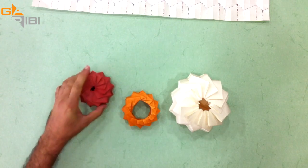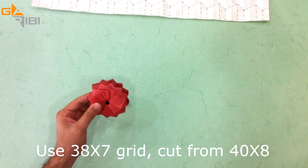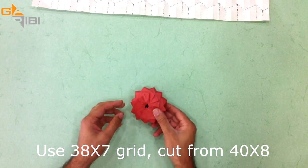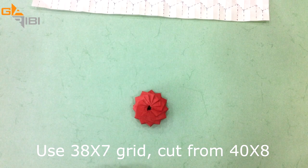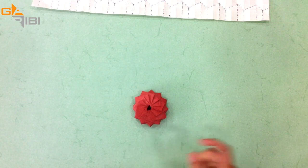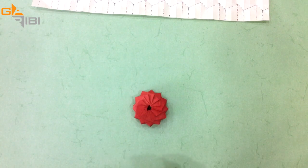What we actually need for this one, which I'm going to teach today, is a strip of seven by 38 squares. Since it's quite difficult to get seven by 38, I'm starting with eight by 40 and then I will cut out one row and two columns to get seven by 38.